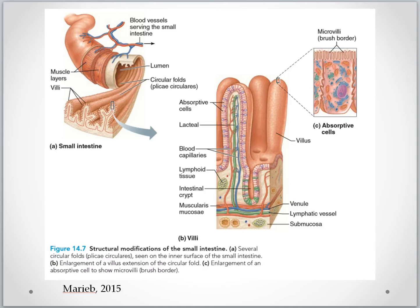The villi consist of a single layer of epithelial cells. On each villus are microvilli, also known as the brush border. In between the villi is the intestinal crypt, which at the base contains specialized stem cells responsible for the production of other stem cells and special cells called transit amplifying cells, which move up along the villus and differentiate into epithelial cells.